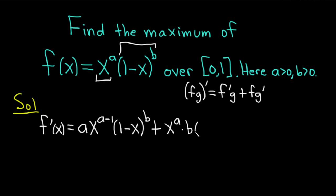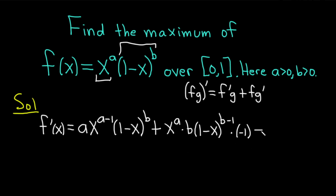Plus the first, x^a, times the derivative of the second. Here we use the power rule and the chain rule: bring down the b, leave the inside piece 1 minus x untouched, subtract 1 from the exponent to get b minus 1, then multiply by the derivative of the inside function. The derivative of 1 is 0 and the derivative of negative x is negative 1. We want to set this equal to 0.